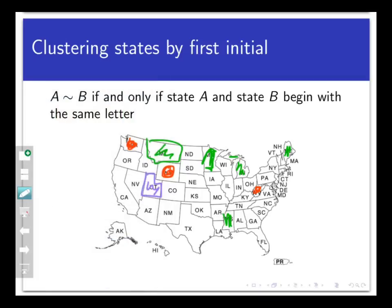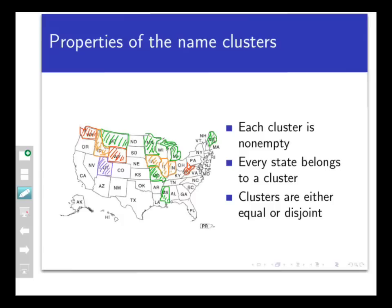Notice that this set of clusters has three things going for it. First of all, each cluster is not empty. Every color that I've listed here does have a state that belongs to it. Secondly, on the flip side of this, every state will belong to one cluster. Some states, like Utah, are the only ones in their cluster. Other states may share a cluster with several others, like Michigan. But if we continue the coloring process throughout the entire map, every state will have some color assigned to it.